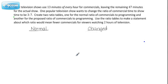Create two ratio tables, one for the normal ratio of commercials to programming, which we're going to put over here, and another for the proposed ratio of commercials to program, which we're going to put over here. Use the ratio tables to make a statement about which ratio would mean fewer commercials for viewers watching two hours of television.